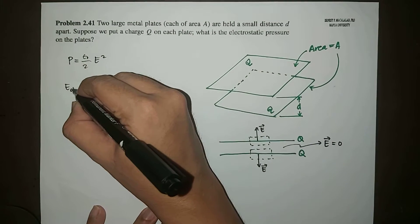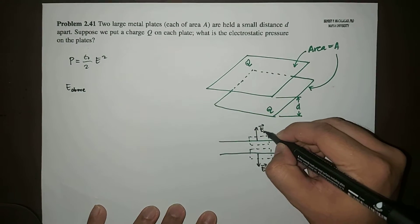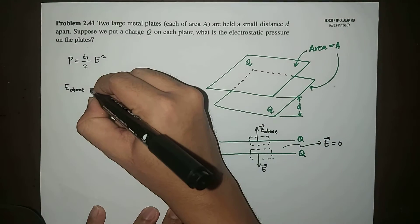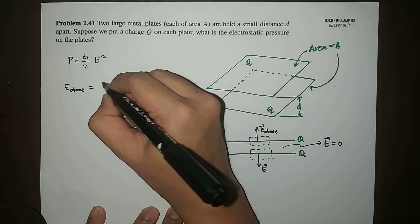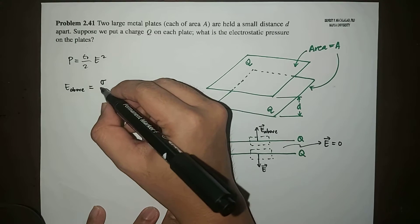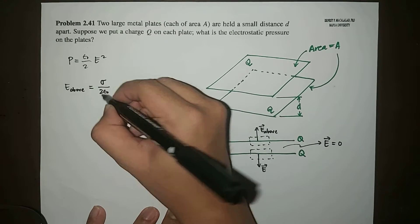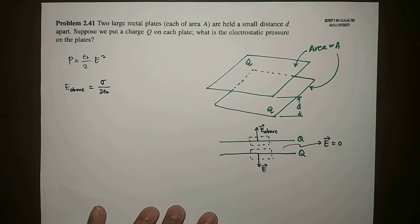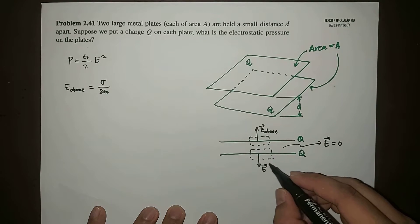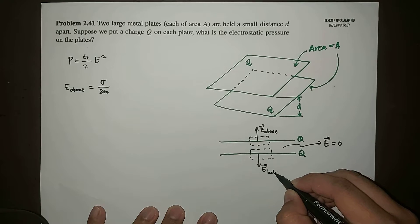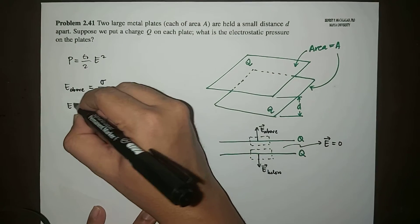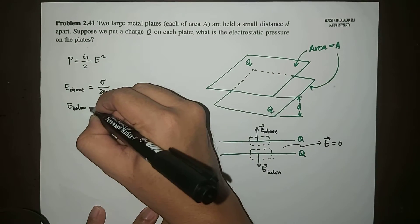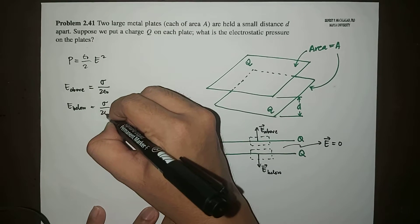So the electric field above is equal to sigma over two epsilon. This is calculated from Gauss's law. The same goes here, the electric field below would be sigma over two epsilon.